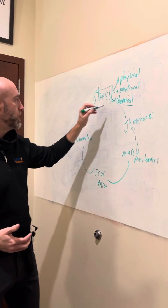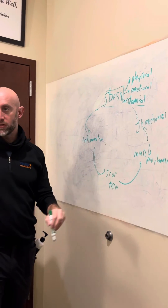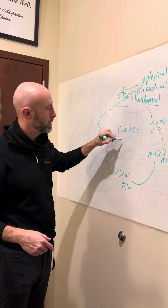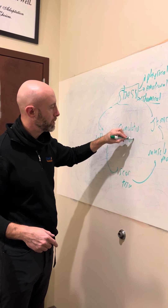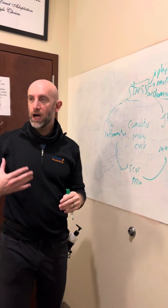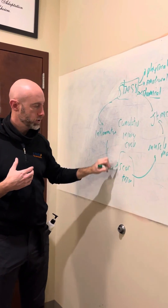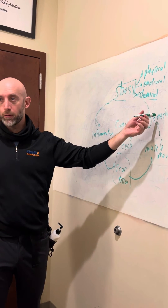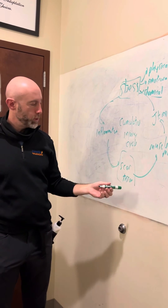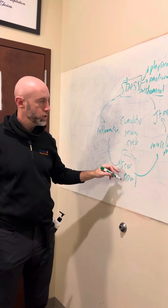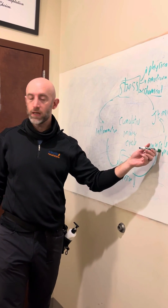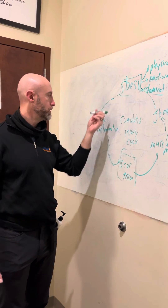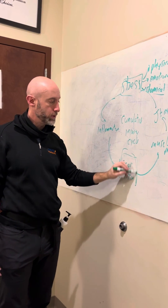This causes more stress, which causes more inflammation — it's a vicious cycle called the cumulative injury cycle. As a PT, I like to start at the scar tissue. When I started learning soft tissue manipulations, I found that if I release the scar tissue, muscles become more elastic, muscle strength returns, joint mechanics improve, stress reduces, and inflammation reduces. So starting with the scar tissue fixes everything else.